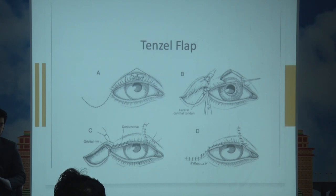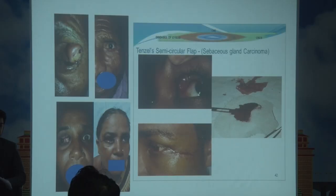This is a Tenzel flap — the schematic diagram usually involved — which is done for upper lid tumors. These are certain cases where the Tenzel flap was done.